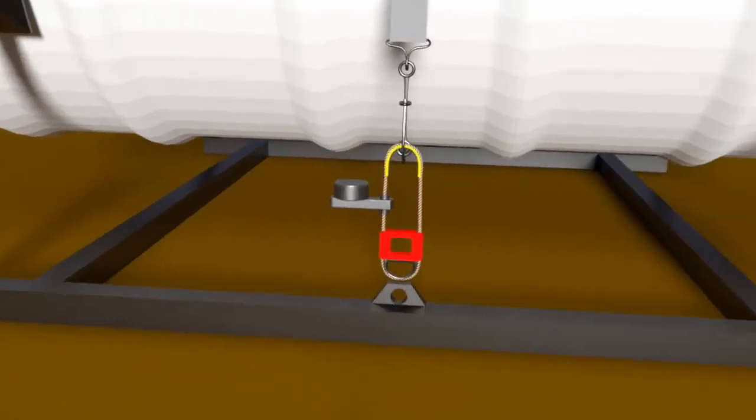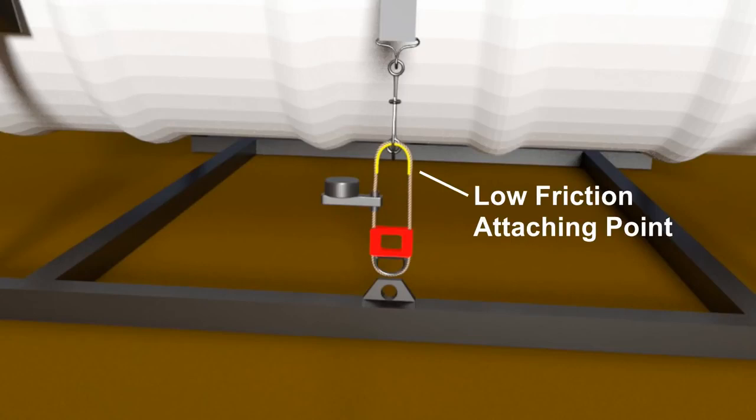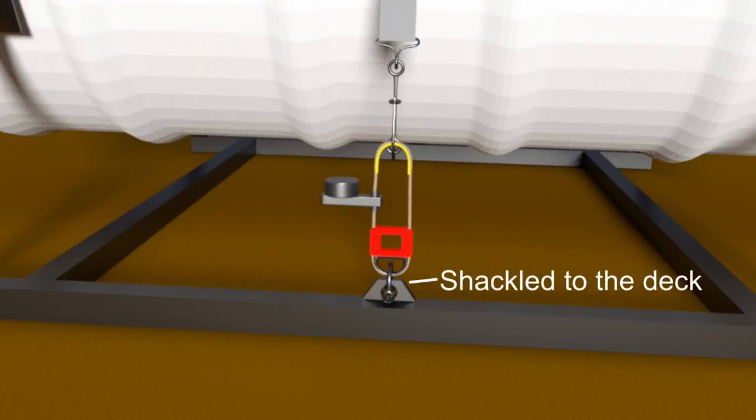On this unit we attach it to the yellow section. This is critical, as it's been specifically designed with less friction for when the HRU operates. The other end of the hydrostatic release is fixed straight to the deck. This end does not need to come free, so we can use a shackle here.